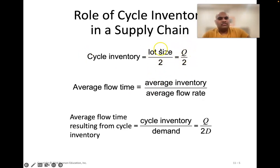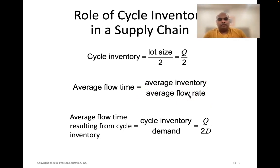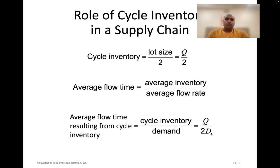Cycle inventory is calculated as half the lot size, Q/2. This is called cycle inventory or average inventory. The average flow time resulting from cycle inventory is Q/(2D) — that is, average inventory divided by average flow rate, where flow rate is essentially demand.